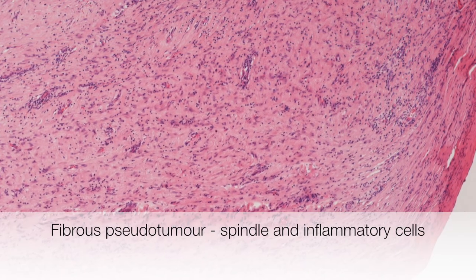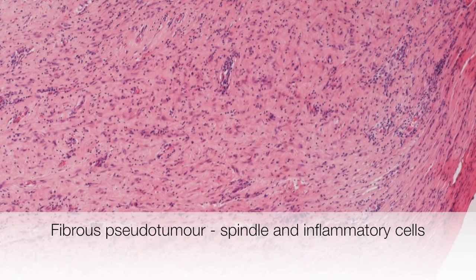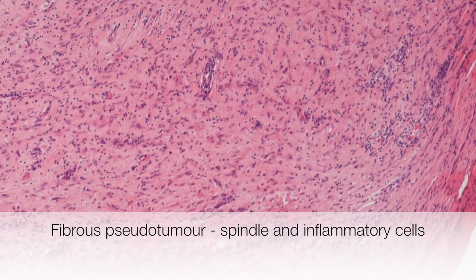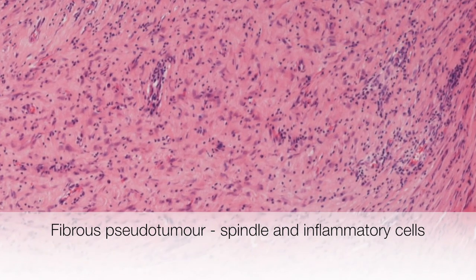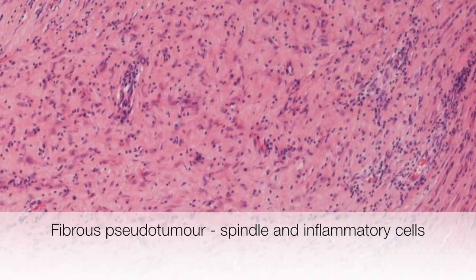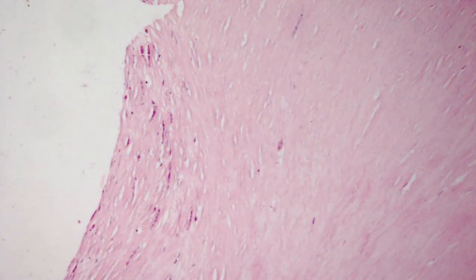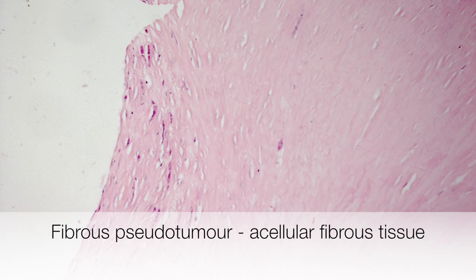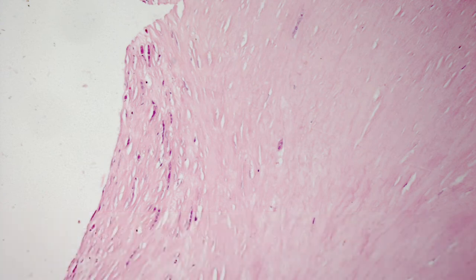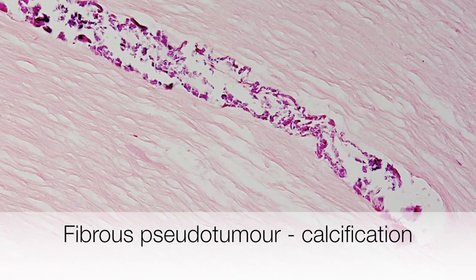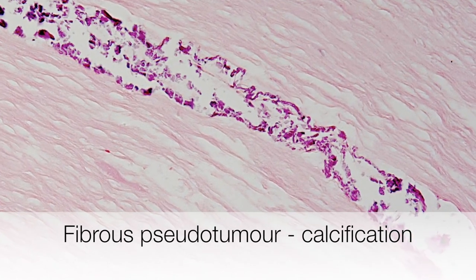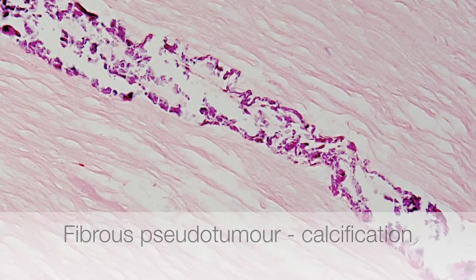On higher power, the lesion is seen to be composed of rather bland spindle cells with a sprinkling of chronic inflammatory cells. In this example, the fibrous pseudotumour is composed largely of acellular fibrous tissue. In this area, the pseudotumour has started to calcify, and the area of calcification is staining magenta.